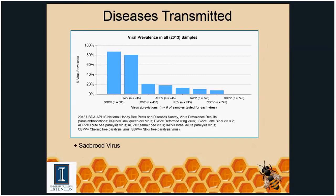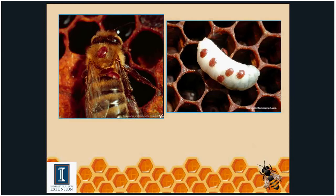One of the biggest viruses we're seeing is Deformed Wing Virus (DWV), which is easy to spot, as well as Sac Brood Virus — both transmitted by varroa. Here's what a varroa mite looks like on the back of a bee, and this picture shows varroa mites feeding on brood inside a cell — the larva has been pulled out of the cell. These are big pests, unlike tracheal mites which are nearly microscopic.